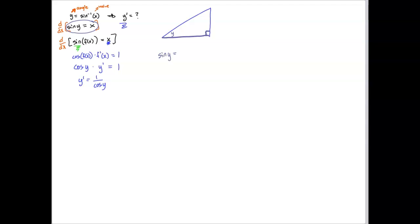So the side opposite y is x and the hypotenuse is 1. Using the Pythagorean theorem, I'll call the third side b: b² + x² = 1², so b² = 1 − x², and b = √(1 − x²). So that third side is √(1 − x²).